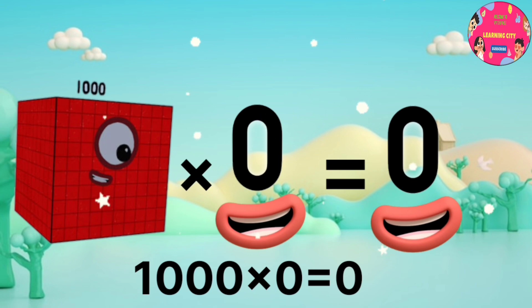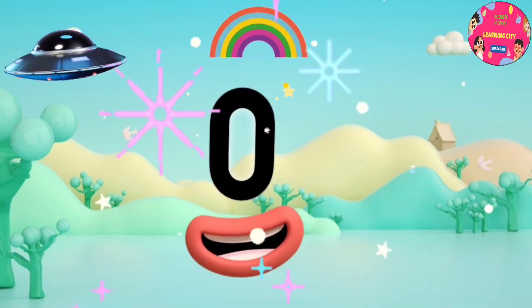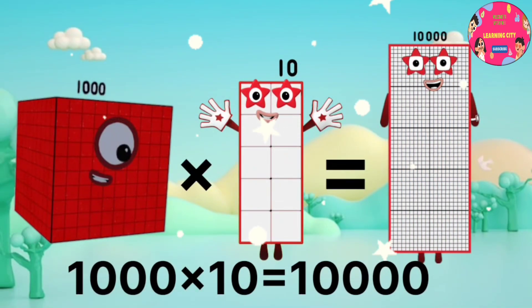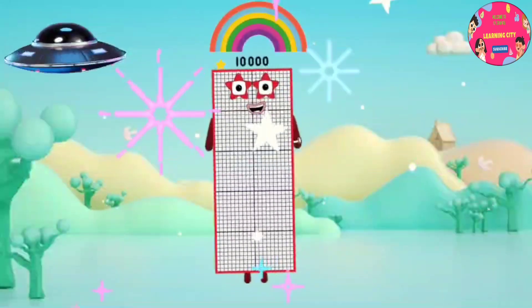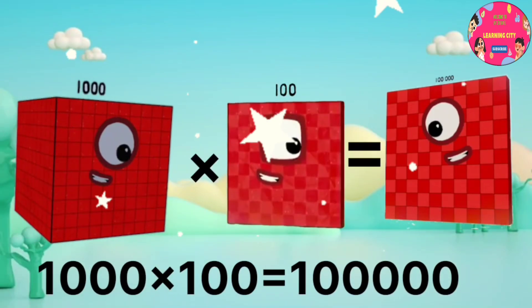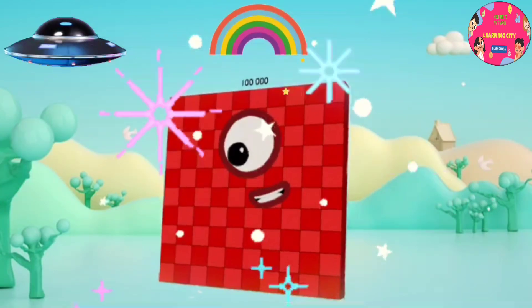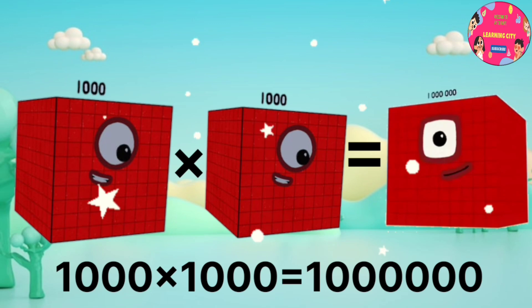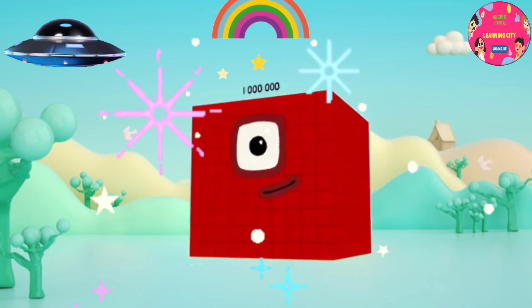1000 x 0 equals 0. 1000 x 10 equals 10,000. 1000 x 100 equals 100,000. 1000 x 1000 equals 1,000,000.